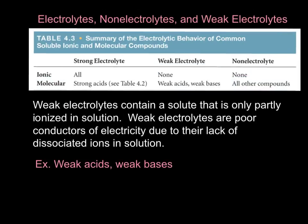Let's talk about weak electrolytes a little more. Weak electrolytes contain a solute that is only partly ionized in solution, meaning only part of it dissociates. Weak electrolytes are poor conductors of electricity due to their lack of dissociated ions in the solution. Since all of that particular substance didn't dissociate into its individual ions, you're not going to have as many ions in solution, meaning you're not going to have as many particles that can conduct or carry electric charge. These are usually going to be weak acids and weak bases.